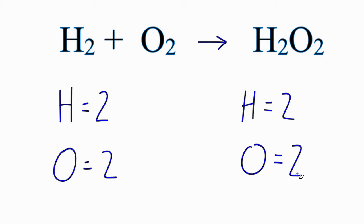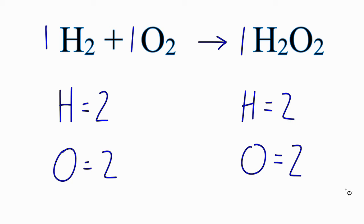What we could do is report our coefficients — those are the numbers in front of each of the compounds — as one, one, one. Because we assume that there's a coefficient of one in there if nothing is written. You don't have to write the one, but many times it's helpful to report your coefficients as one, one, one, and then people know exactly what you're talking about.